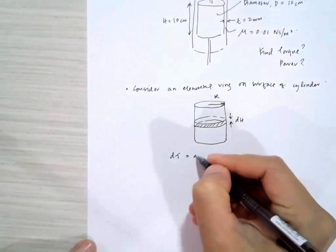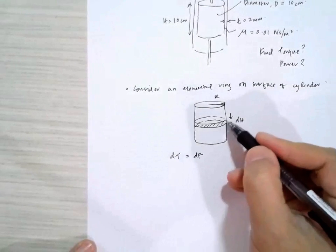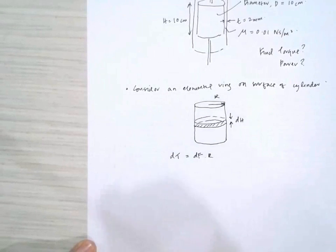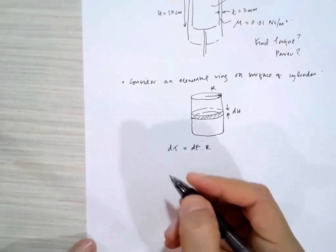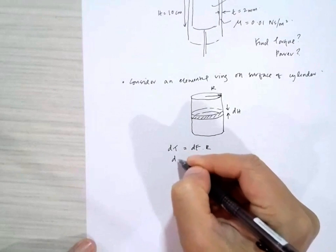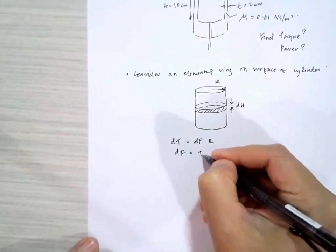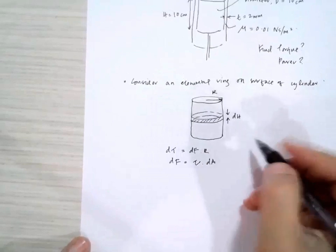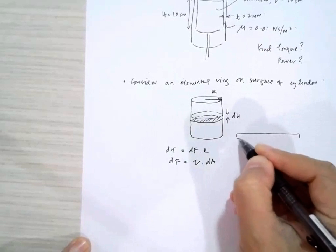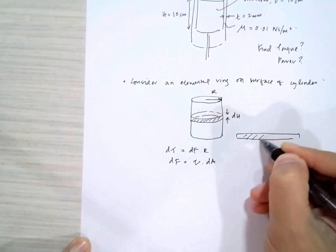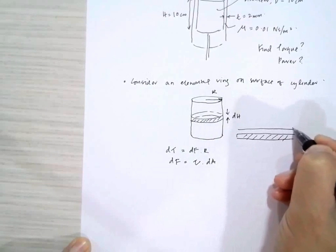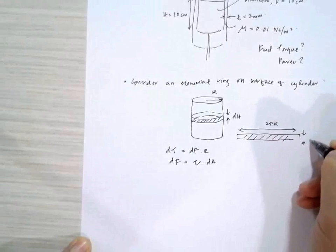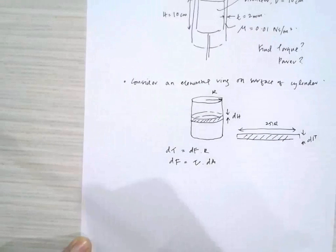The torque on this elemental ring is equal to df times r, where f is the shear force acting on the surface multiplied by the arm's radius r. df equals the shear stress multiplied by dA, where A is the area. If we open this up, the length is 2πr and the thickness is dh.